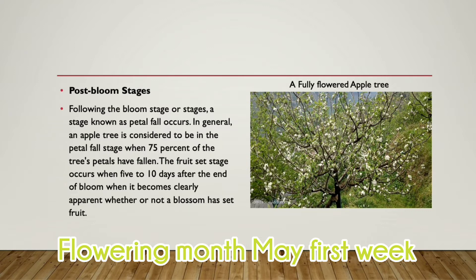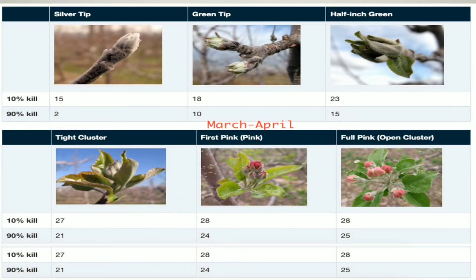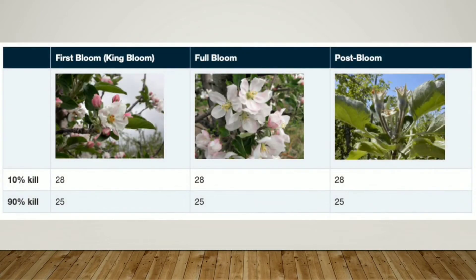Here is the complete pictured form of the cycle. Starting from the silver tip, moving on to the green tip, then a little half-inch green leaf comes out — called the half-inch green tight cluster — then the first pink stage, pink bud stage, fully pink, and then the fruit site where you can see the first bloom, which is the king bloom, and then full bloom — a complete bloom on the plant. Later, in the post-bloom stage, the fruit can be seen like a small wheat grain in size. I have a video from my farm playing on the screen — have a look and enjoy.